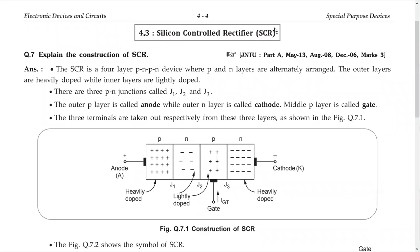Structure — very easy. P region, N region, P region, N region. It is like two PN junctions stuck together. For a PN junction, the outermost P region is the anode and the outermost N region is the cathode. Same here — outermost P region is the anode, and the outermost N region is the cathode.